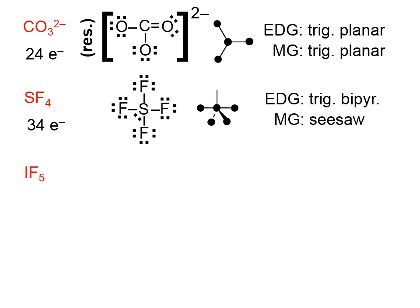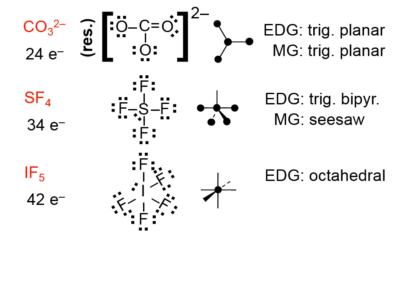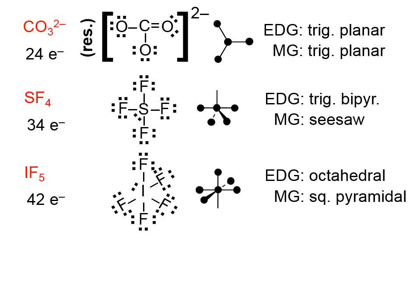How about this one? These are all halogen atoms, and halogens all have seven valence electrons, giving a total of 42 electrons. If we complete the octets around all the fluorines, we count 40, so the extra two go on the central atom. That means the electron domain geometry is octahedral, and there are five domains that are bonding, giving us a molecular geometry that is square pyramidal — a square base with a point on top, and the unshared pair shown at the bottom.